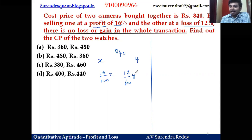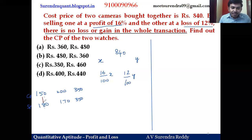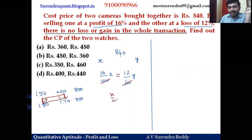For example, if CPs are 150 and 200, and SPs are 180 and 170, the total CP equals total SP — 350 each — so no profit no loss. The 30 rupee profit on one equals the 30 rupee loss on the other. So, profit equals loss: 16 percent of x equals 12 percent of y. Cancel the hundreds; x to y ratio is 12 to 16, which is 3 to 4.